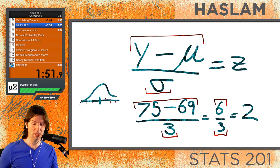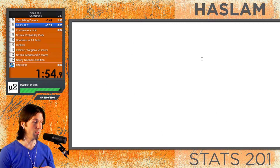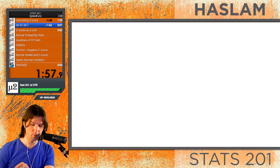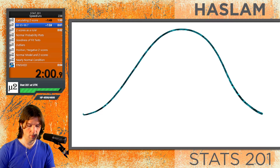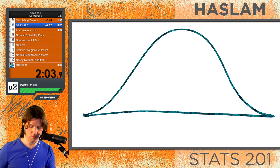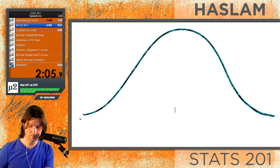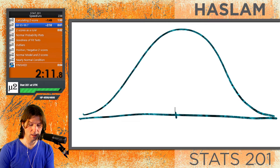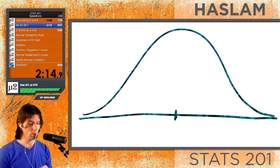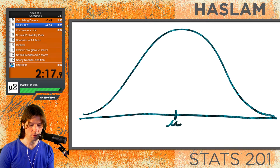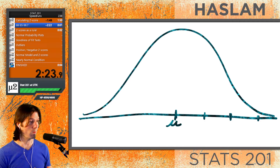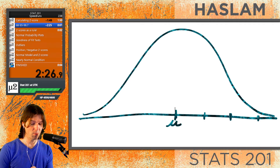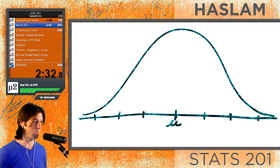A big thing we can do with this is the 68-95-99.7 rule. Let's draw out our normal curve. We're going to use this curve and draw in the 68-95-99.7 rule. At the center of the curve we have the mean. We go up three standard deviations, and 99.7% of the data will be contained within those three standard deviations — we usually don't talk about further than three.